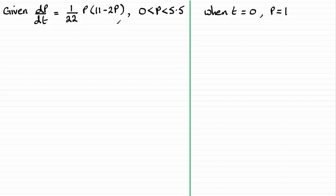And to solve this differential equation, we need to separate the variables. So what I'm going to do is multiply both sides by 22 and divide both sides by the p times 11 minus 2p. If we do that, you're going to get this line here. I could put the 22 where the 1 is, but it's better, I feel, to pull the 22 out.